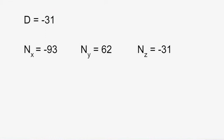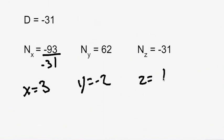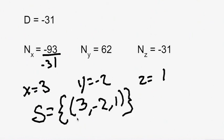And so then you can solve each of these by yourself. So x equals nx over d, so -93 over -31, so x equals 3. Similarly for y, y equals -2, and z equals 1. And so we have our solution set of the point (3, -2, 1), which is the same as we had solved for it in section 4.6. And that is how you simplify higher order determinants.